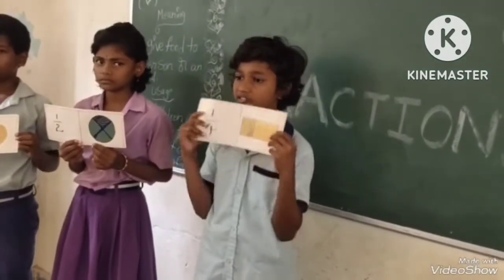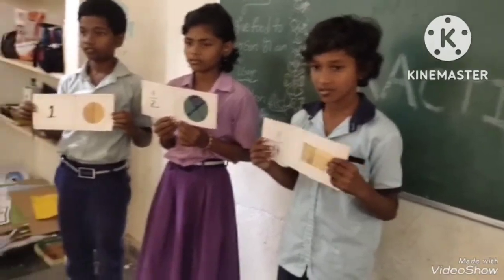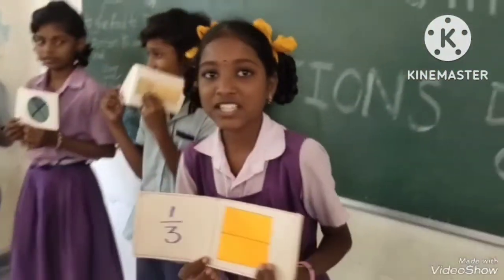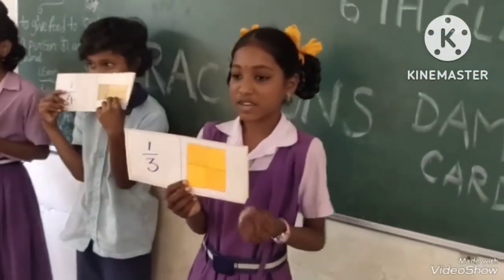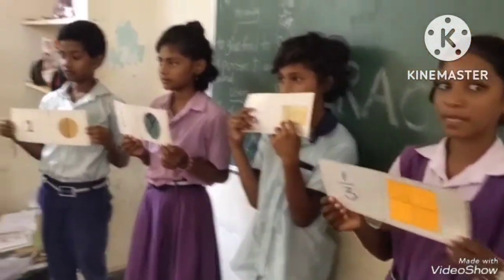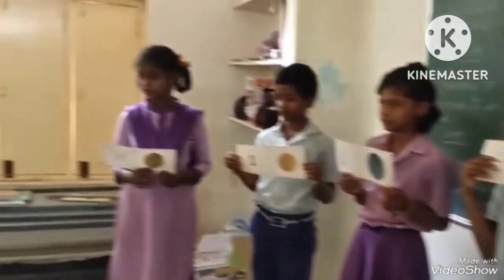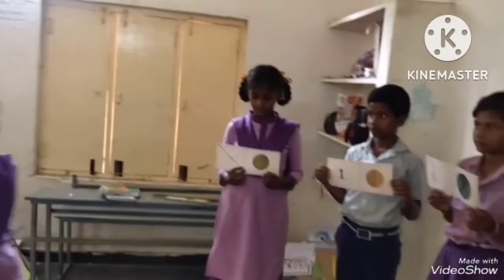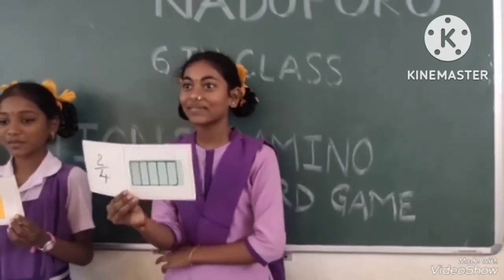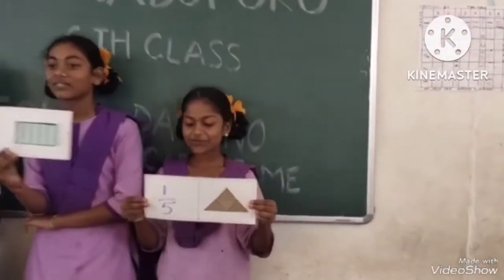What is the next fraction? 1 by 3. Friends, the answer is 1 by 3. What is the next fraction? 2 by 4. Answer is 2 by 4. What is the next fraction? Friends, the answer is 1 by 5.